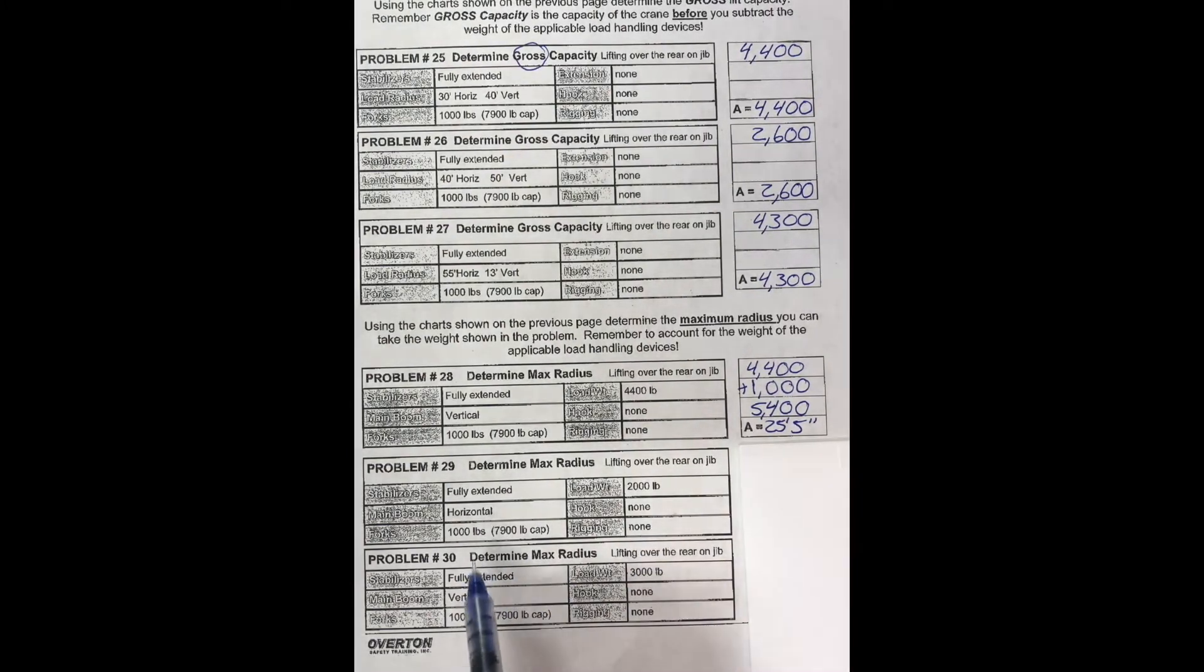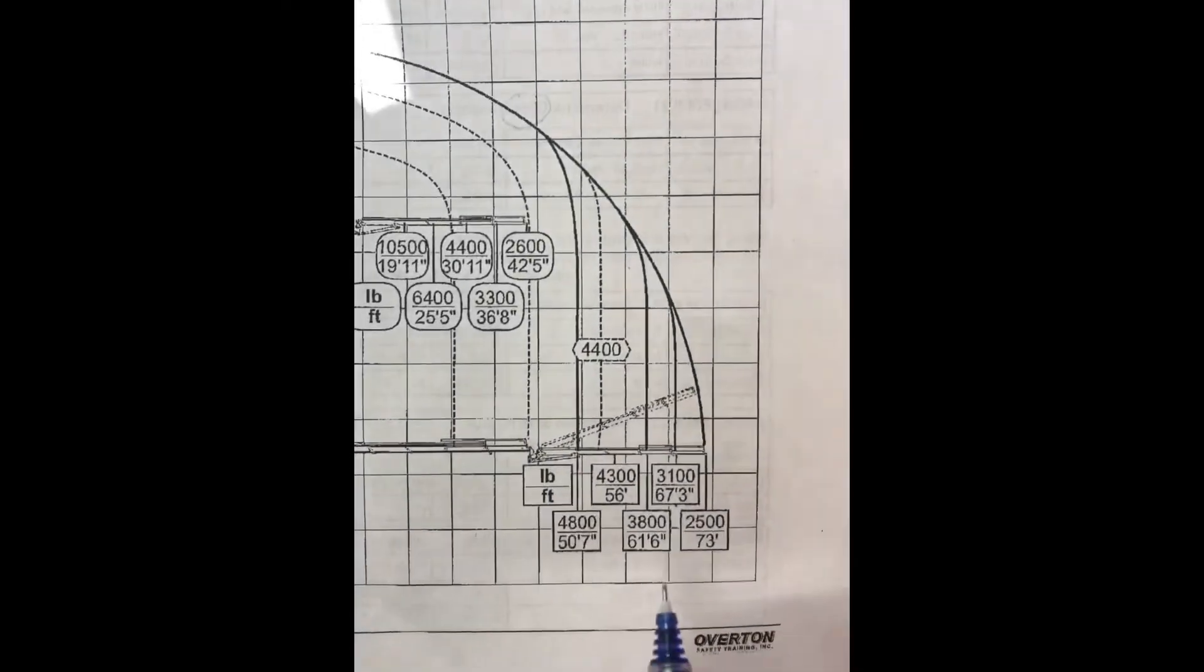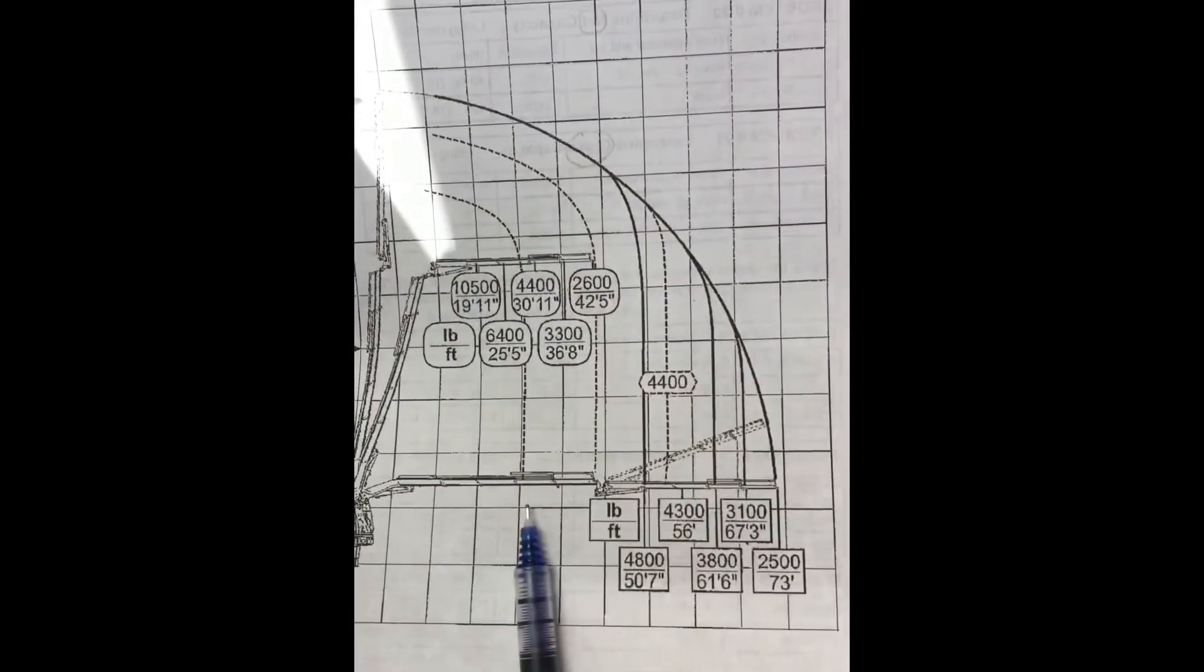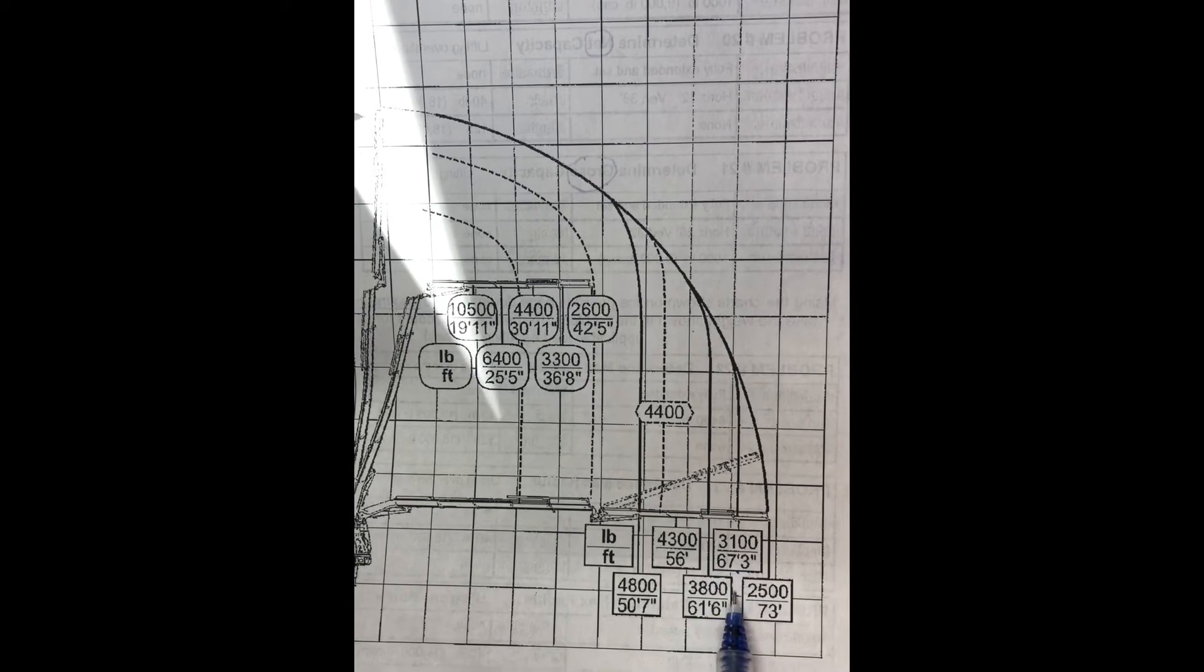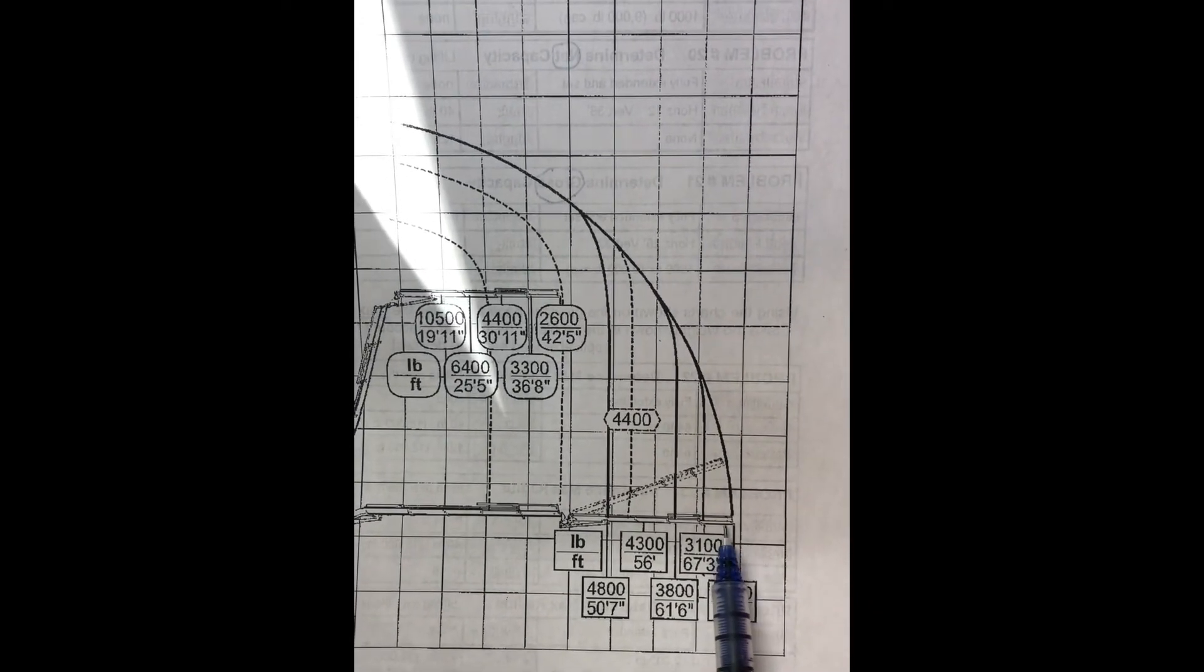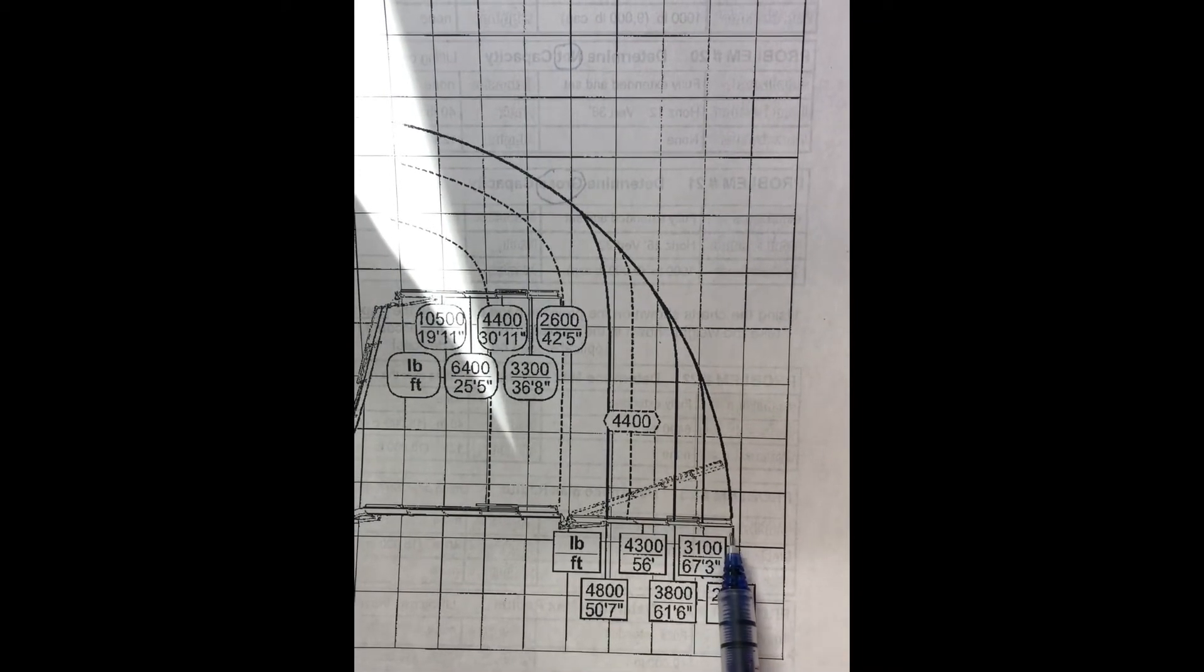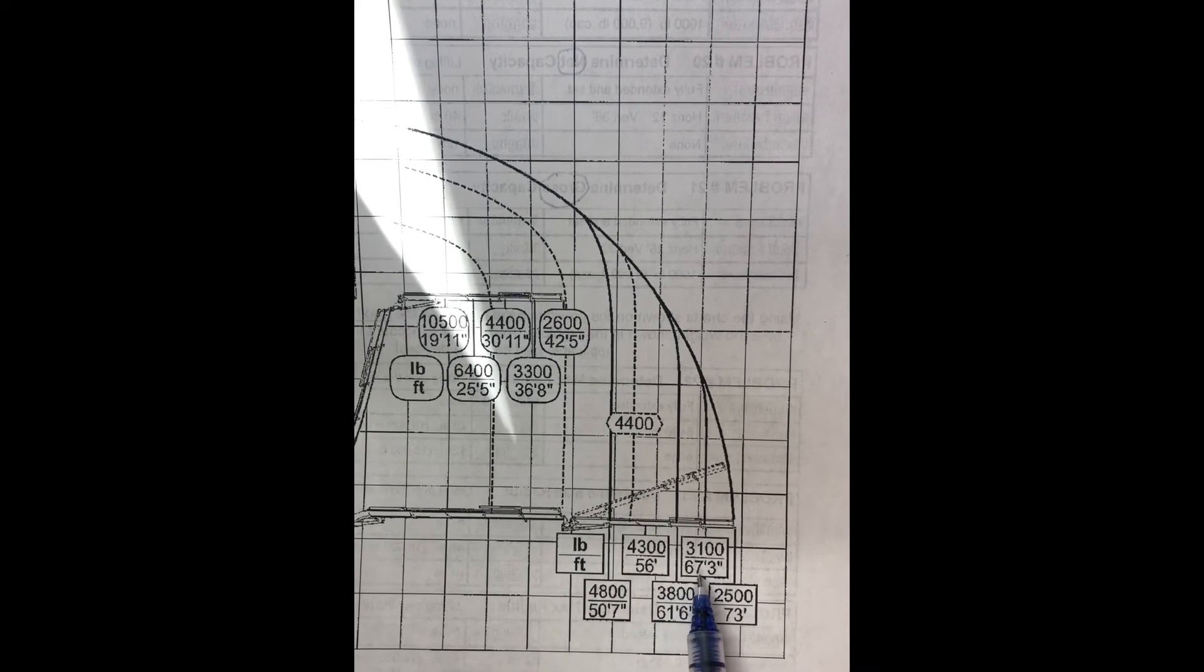Next one. Our load weight is 2,000 pounds. Our fork weight, 1,000 pounds. Total of 3,000. We're going horizontal. So we need to go straight out. Looking for 3,000 pounds. Here we got a 3,100 and a 2,500. So it's going to lie between those two. 3,000 is too heavy to say that it can go 73. So you got to come back. 3,000 pounds can go 67 feet, 3 inches.